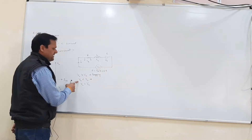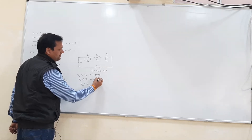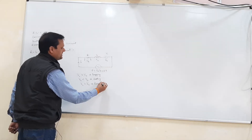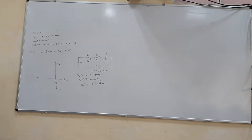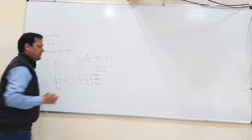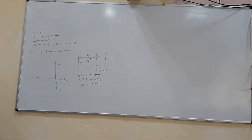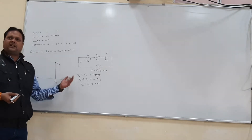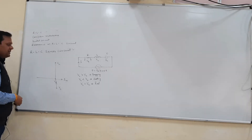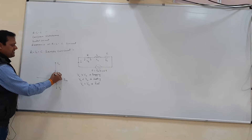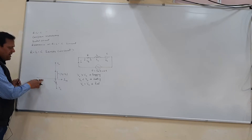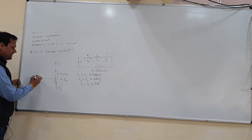In the case where Vc is greater than Vl, the current would be leading, and in the case where Vl equals Vc, the circuit is purely resistive. We are considering the first case where Vl is greater than Vc. Since both Vl and Vc are 180 degrees out of phase, they neutralize each other, so the net reactive voltage is Vl minus Vc. The resultant of Vr and (Vl minus Vc) gives us Vm.